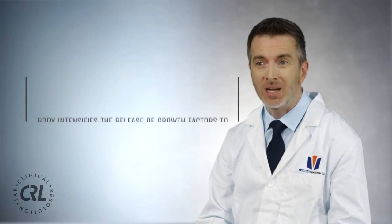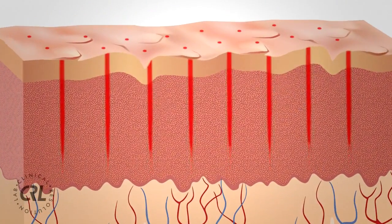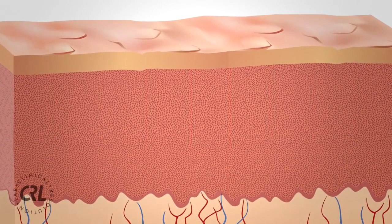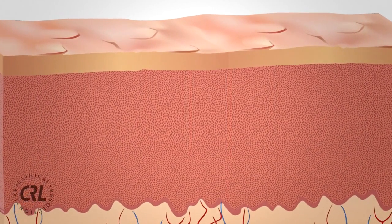During the regeneration cycle, the body intensifies the release of growth factors within the deeper layers of the skin. As a result, collagen and elastin production is accelerated to heal the wound and thereby building new layers of healthy skin cells.